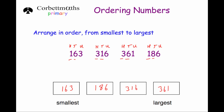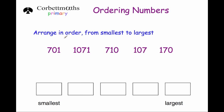Let's look at another question. This one says arrange in order from smallest to largest: 701, 1071, 710, 107, and 170. Again, let's consider the place value columns — thousands, hundreds, tens, and units — for each number.